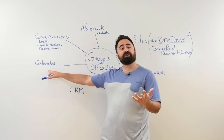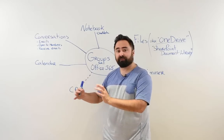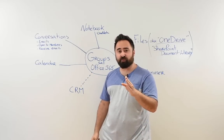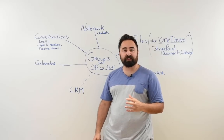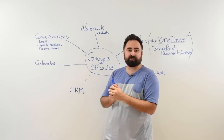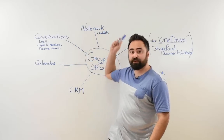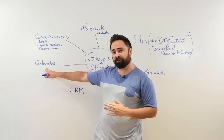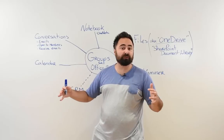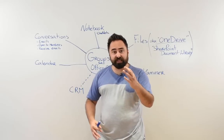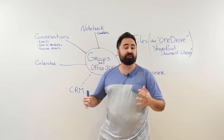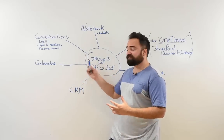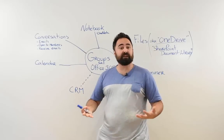Another way to work with it is a vacation request. You create a group for vacation requests and you could just be using the calendar piece. The key takeaway from this video is that it's not because you use groups for Office 365 that you have to use every single piece — files, Yammer, notebooks. You could just be using the calendar, because teams evolve and need different things. We actually have a vacation request group here at ShareGate, and we have a calendar.